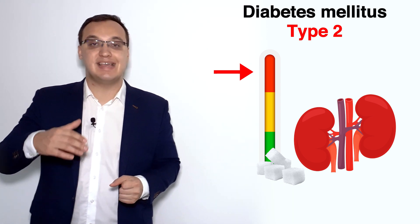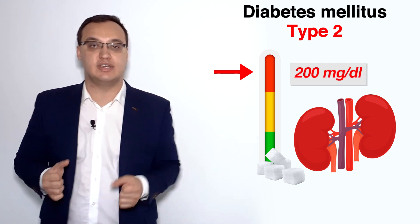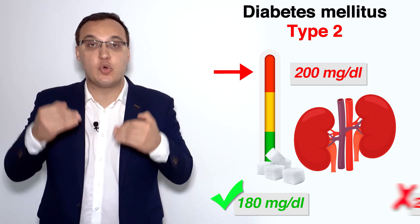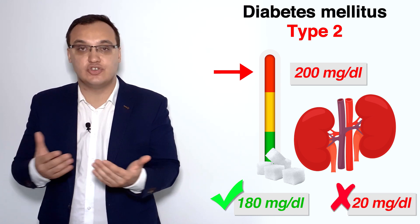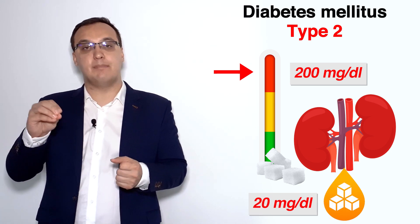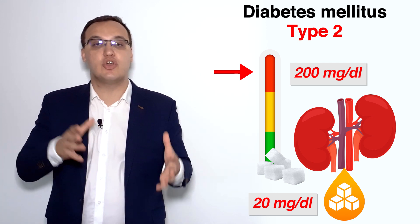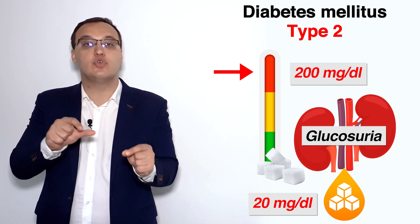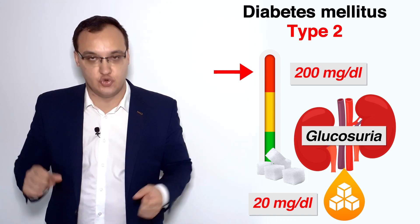Let's say a patient has 200 milligrams per deciliter of sugar in his blood. The kidneys will absorb 180, and the remaining 20 cannot be absorbed because the kidney function has a limit. That 20 mg/dL of glucose will be excreted through the kidneys — we call this glucosuria. We have glucose in the urine: 20 milligrams per deciliter of glucose in the urine.